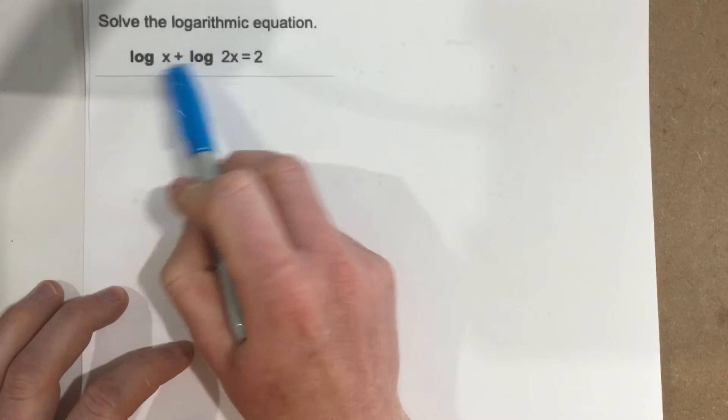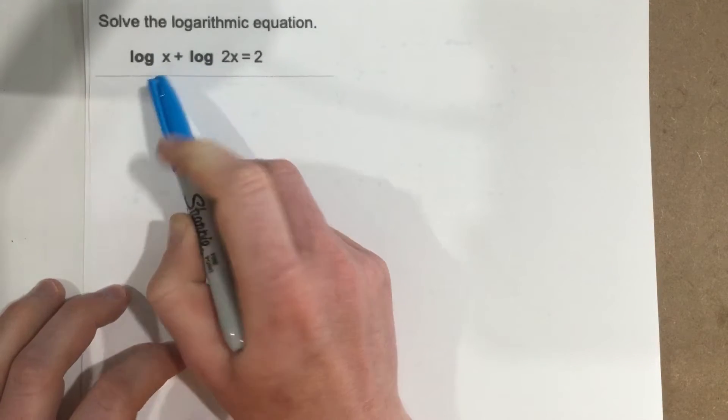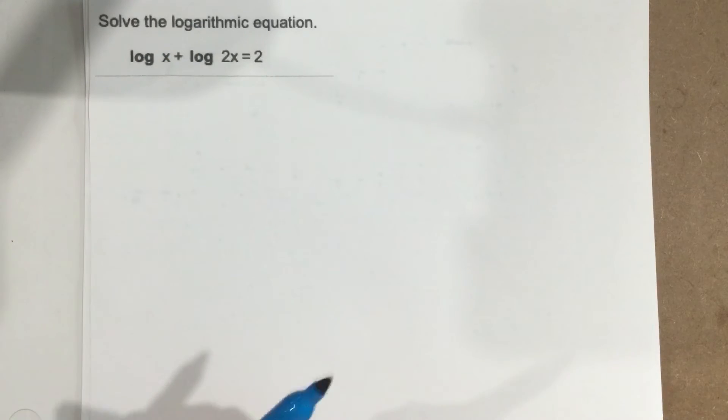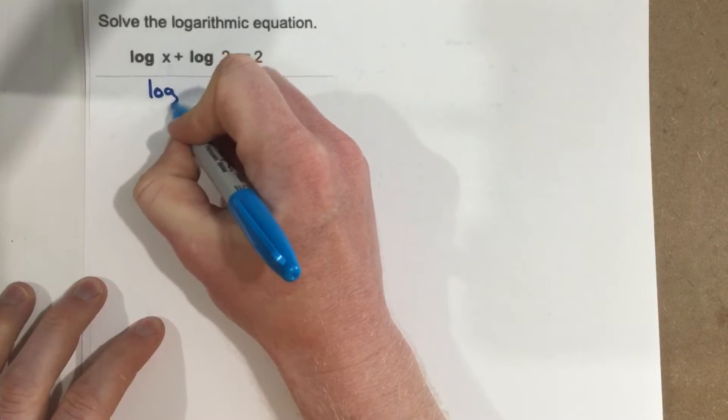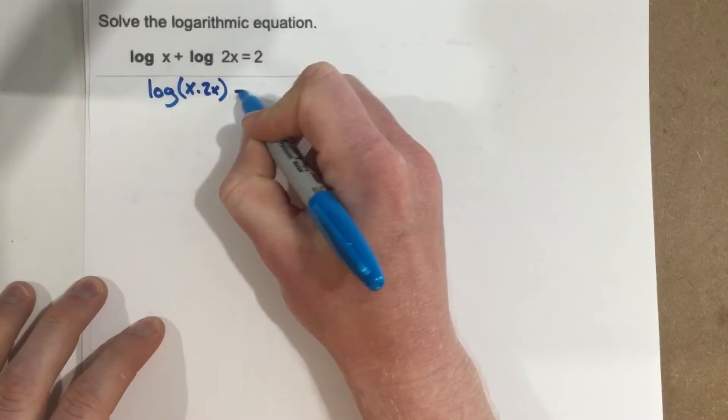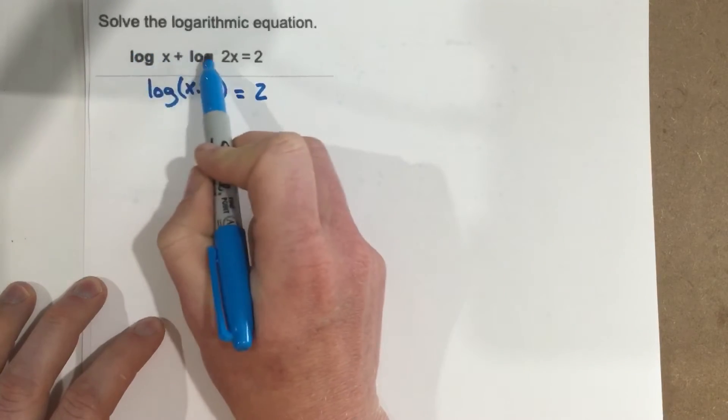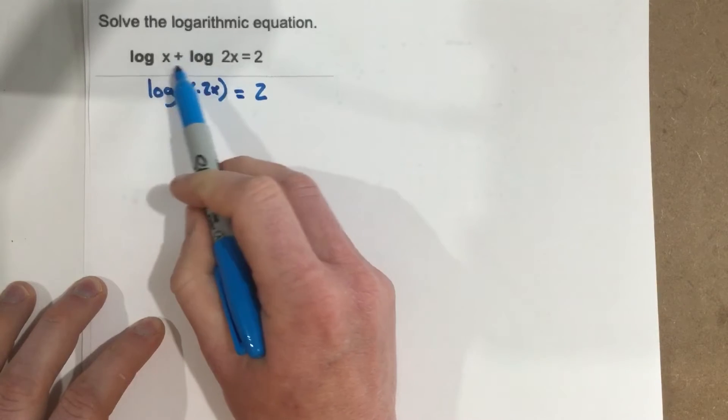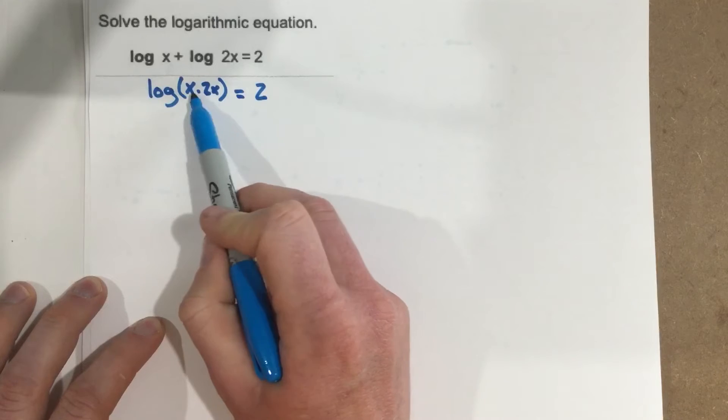They have the same base. If two logarithms have the same base and they're being added, we can combine that into one logarithm with a multiplication. So we can say that this is log of x times 2x equals 2. So this is the logarithm addition property. If you have two logs with the same base and you're adding them, you can just simply make one logarithm and multiply the insides.